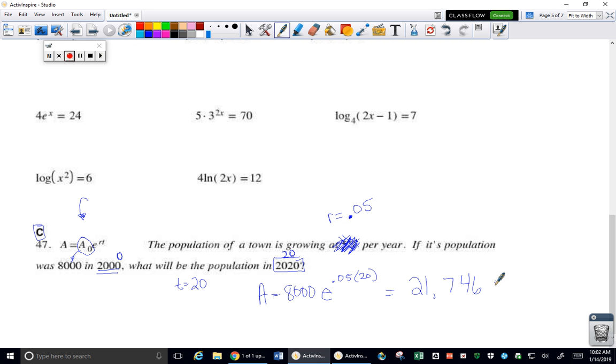Okay, yes, there's a decimal place, but you can't have a quarter of a person that's living as a whole entire person. So we're going to have 21,746 as the population after 20 years.